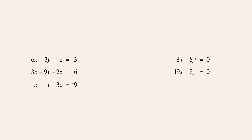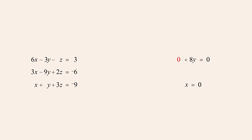When we add the equations we get eleven x equals zero, or dividing both sides by eleven, x equals zero. Now that we know the value of x, we can set x to zero in either of the two equations we just added and solve for y. Setting x to zero in the first equation gives us eight y equals zero, or dividing both sides by eight, y equals zero.